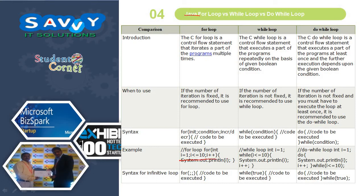Here all are printf statements, not system.out.println. For infinite loops, we are putting semicolons with no conditions, so automatically it becomes an infinite loop. While one is also an infinite loop — this applies to these two loops.